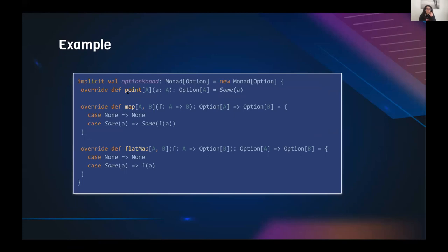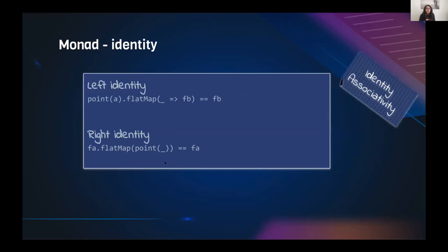Let's verify with Option. 'point' constructs Some(a). 'map' is the same implementation as before. 'flatMap' simply applies the function to the current element, automatically returning an Option[B].